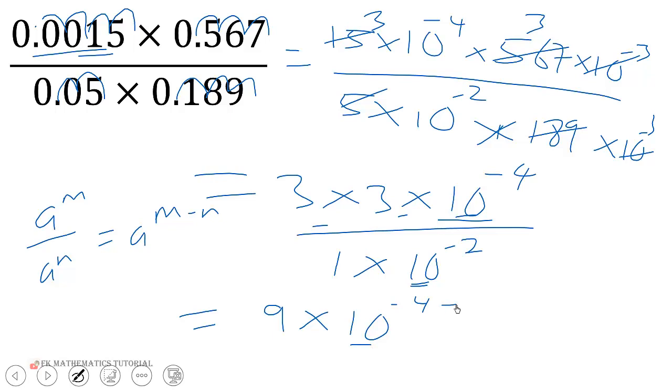If you have a to the power of negative 4 minus negative 2, this will give you 9 times 10 to the negative 4 minus negative 2, that will give you negative 4 plus 2, which will give you negative 2.